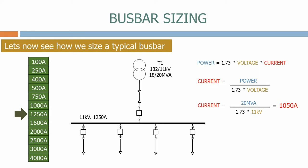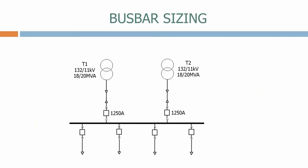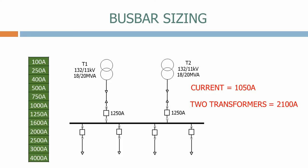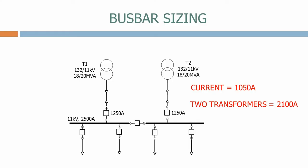As the busbar is rated at 1250 amps, we normally give the transformer incomer circuit breaker the same rating. Let's now look at two transformers feeding a busbar. We've set the circuit breaker rating for each transformer at 1250 amps based on the maximum current rating for each transformer. The current for each transformer is 1050 amps, so two transformers give 2100 amps. Looking at our standard busbar rating table, we'll choose a busbar rating of 2500 amps. The busbar section breaker is normally made the same rating as the busbar, which is 2500 amps.